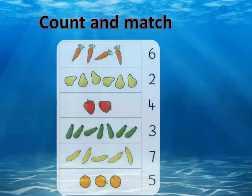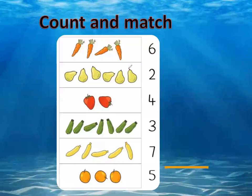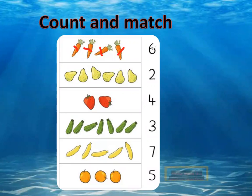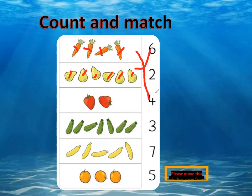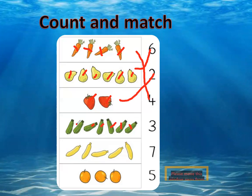How many carrots do we see here? We put a small line so let's count while we are counting: one, two, three, four. Let's count the pairs: one, two, three, four, five, six. What is number six? Very good, that's number six. How many strawberries do you see here? One, two — very good, that's number two. Let's see the zucchini: one, two, three, four, five, six, seven. What is the number of the week? Seven!